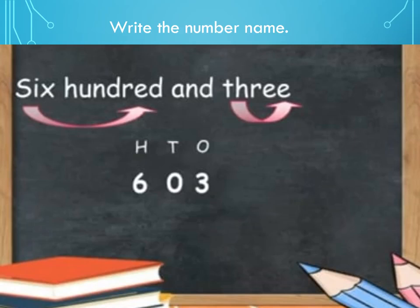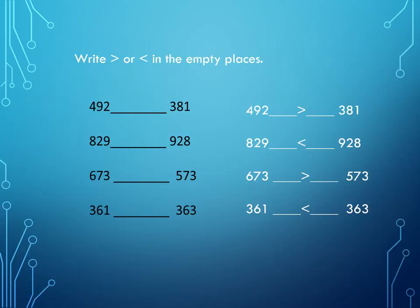This is our next topic: greater than or less than. You have to write greater than or less than sign in empty places. First number is 492 and 381. Now look at the first digit that is in hundreds. First we have 4 and then we have 3, means 4 is greater than 3, so we put the greater than sign towards 492.